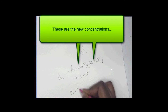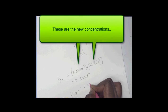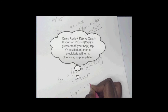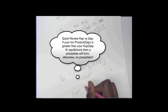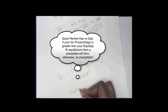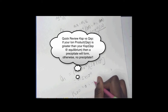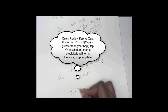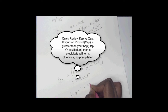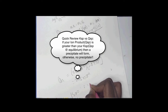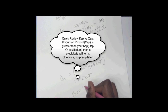So you now multiply them together, right? Now you find your QSP once you get to the end. And when you multiply these two together, you're going to get 2.5 times 10 to the negative 11. And the KSP is 1.8 times 10 to the negative 10.